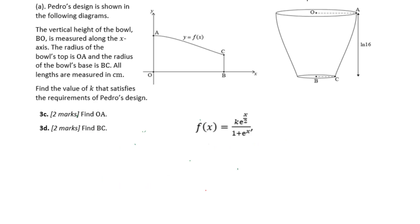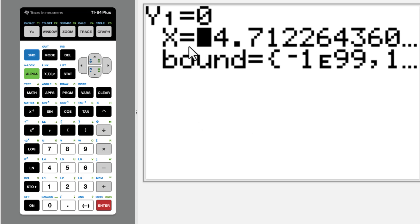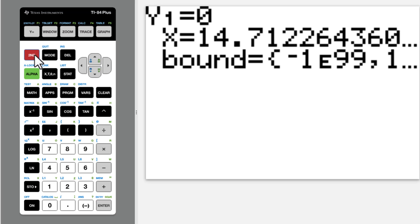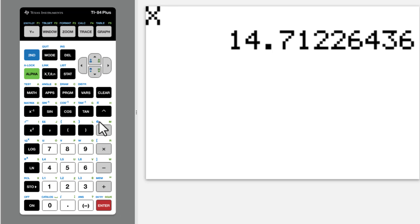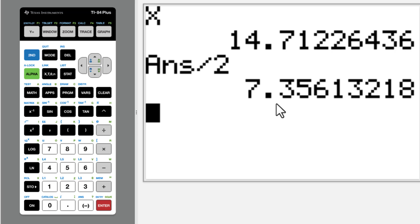Let's go to 3c. Find OA. We know OA equals f of 0, that equals k over 2. Go to calculator. We got k equals 14.7122, so quit, then x enter, divide by 2. x equals 7.36.